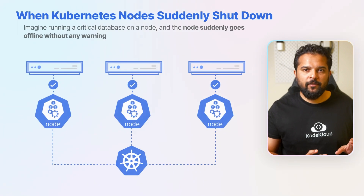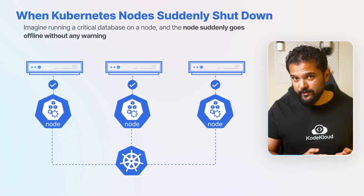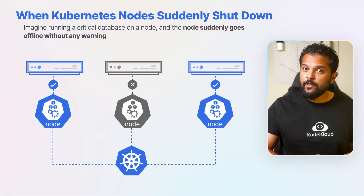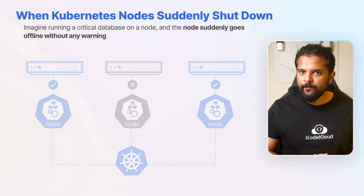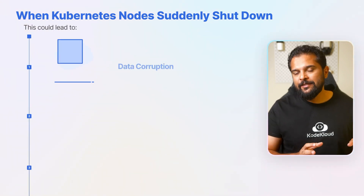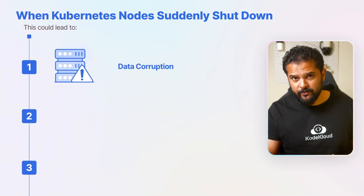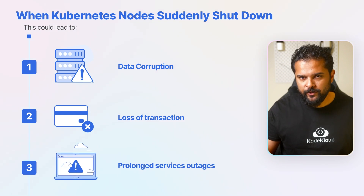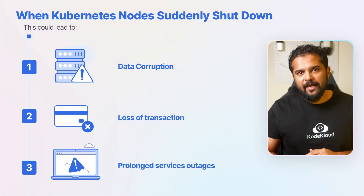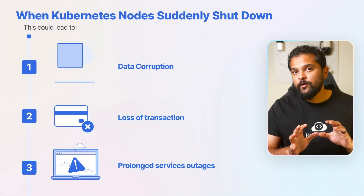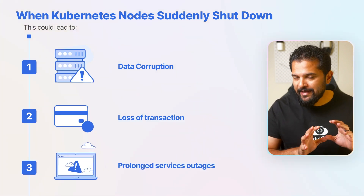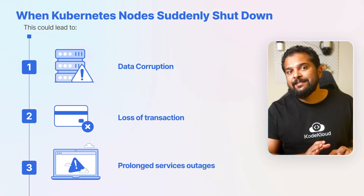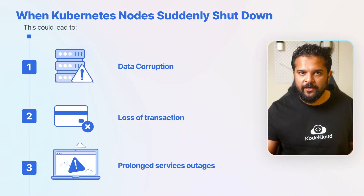For example, imagine running a critical database on a node and the node suddenly goes offline without any warning. This could lead to data corruption, loss of transactions, or even prolonged service outages. It's crucial for Kubernetes to have a mechanism to detect such events and take corrective actions.